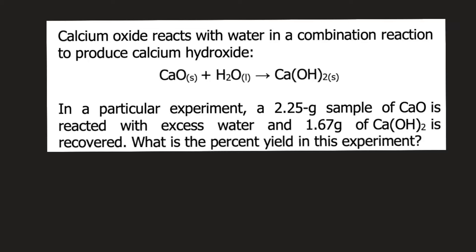Calcium oxide reacts with water in a combination reaction to produce calcium hydroxide. In a particular experiment, a 2.25 gram sample of calcium oxide is reacted with excess water and 1.67 grams of calcium hydroxide is recovered.